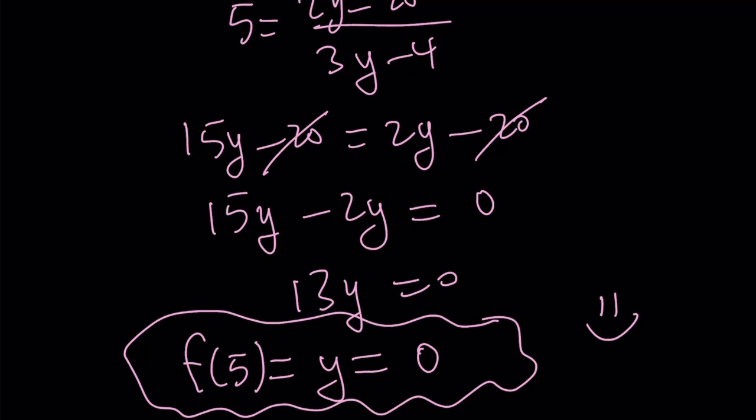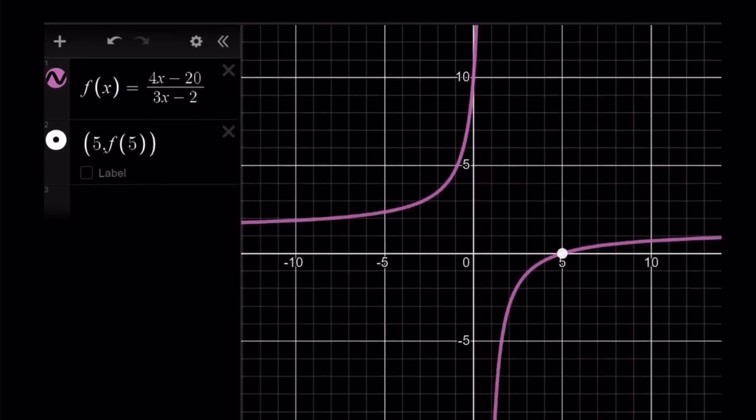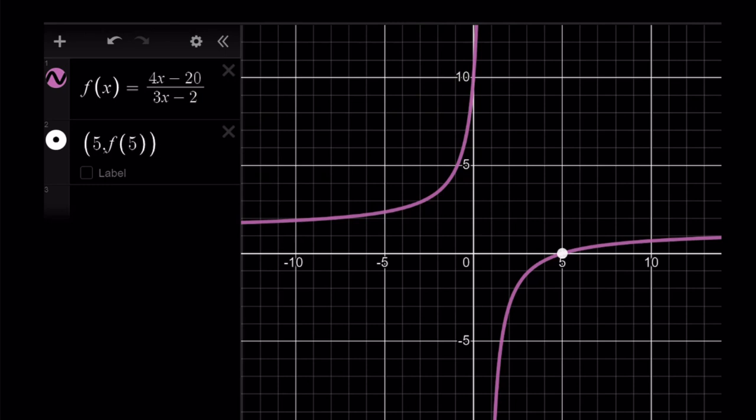But let's take a look at the graph. So what kind of function are we looking at? f of x is 4x minus 20 divided by 3x minus 2. It's a rational function which has a horizontal asymptote and a vertical asymptote. But at 5, notice that it has an x-intercept. Therefore, f of 5 is equal to 0, as we already demonstrated.